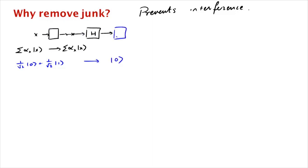So if we were to measure this output, we'll see 0 with probability 1. This is what we wanted to happen.